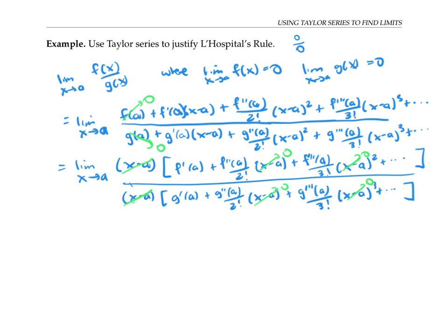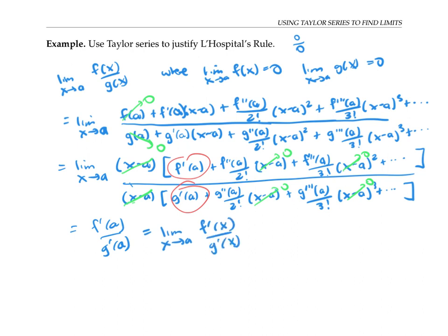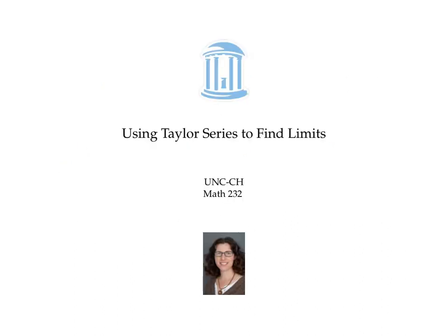That allows us to evaluate the limit as f prime of a over g prime of a, which is the same thing as the limit as x goes to a of f prime of x over g prime of x by the definition of continuity, because the derivatives are also continuous. So we've shown that the limit of f of x over g of x is the same as the limit we get by taking the derivatives, which is exactly L'Hôpital's rule. In this video, we used Taylor series as an alternative to L'Hôpital's rule for finding limits of 0 over 0 indeterminate forms, and we also used it to justify L'Hôpital's rule.